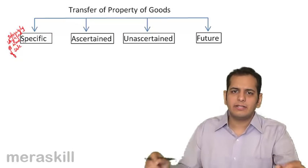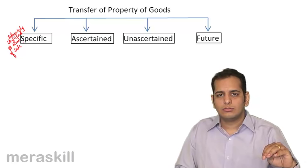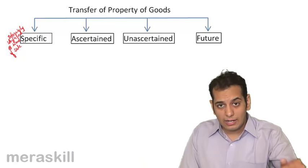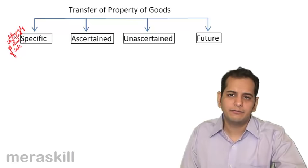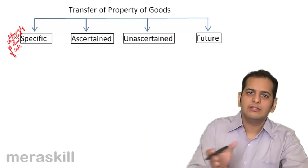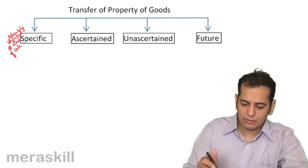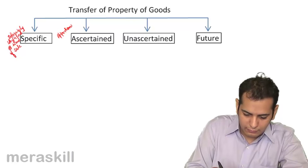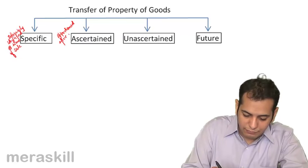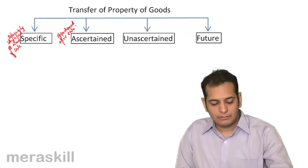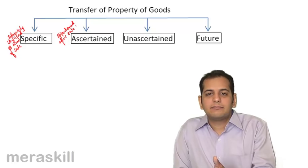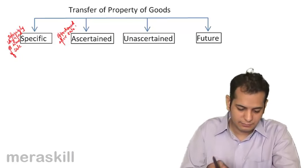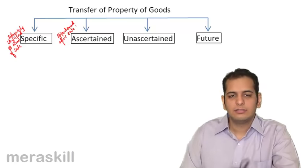If the grocer does not separate the rice at the time of sale and tells you he'll deliver it after an hour, the goods were not separately identified at the time of sale. Later the seller apportions and separately identifies them — such goods are called ascertained goods. Specific goods are separately identified at the time of sale; ascertained goods are separately identified after the contract of sale.